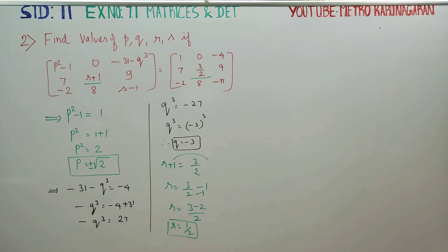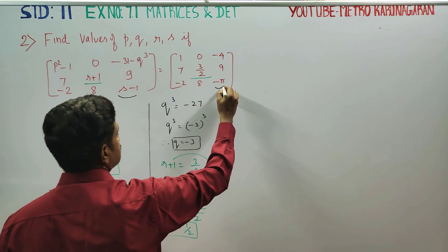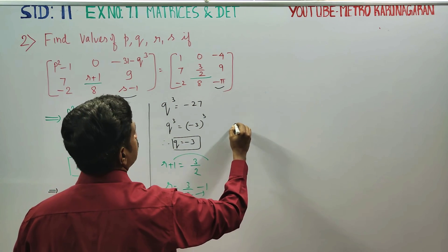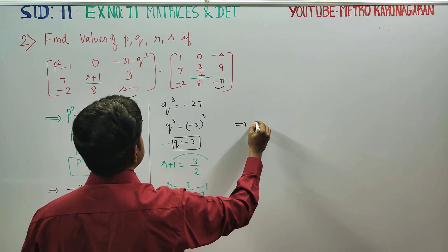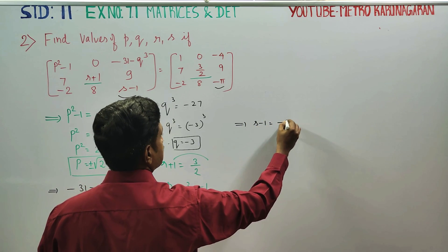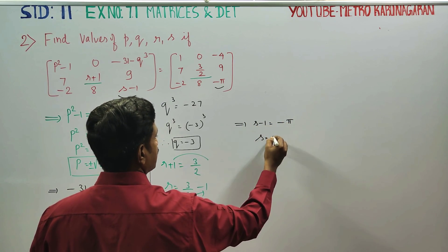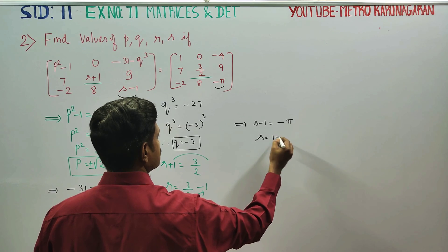The last element implies S minus 1 is equal to minus pi. S is equal to minus 1 plus 1.